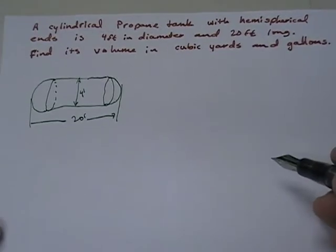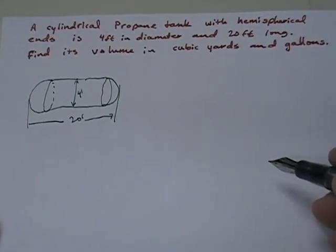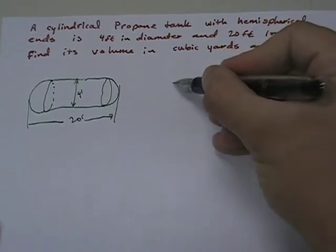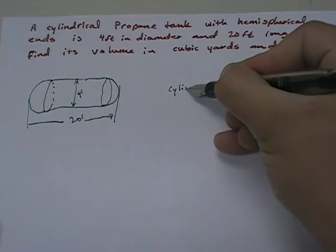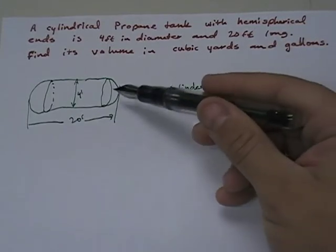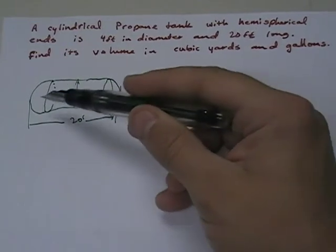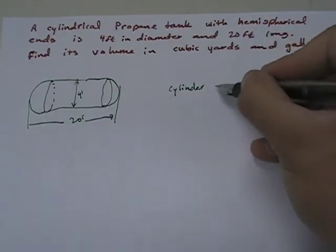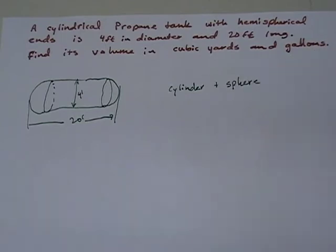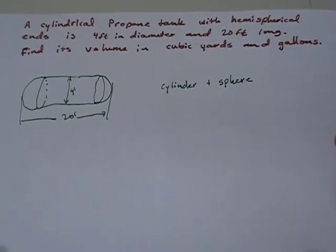And so what we have to do is we have to break this into what is it really. And I want you to see what I see. I see a cylinder, picture a can, a soda can. And I see a half of a sphere and another half of a sphere, which in total makes an entire sphere. So I have a cylinder plus a sphere.